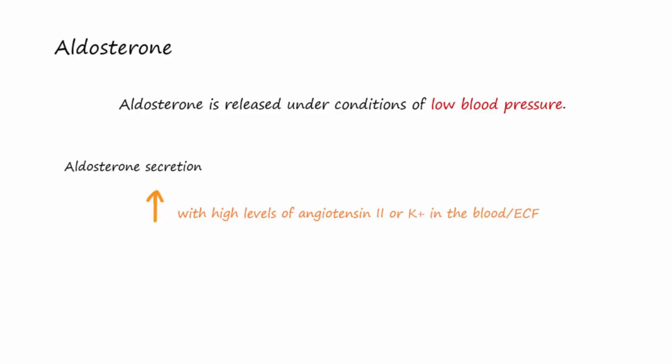Aldosterone is released under conditions of low blood pressure. Secretion of aldosterone will increase when levels of angiotensin II or potassium in the blood and extracellular fluid increase. It will decrease when sodium ion concentration in the extracellular fluid increases.